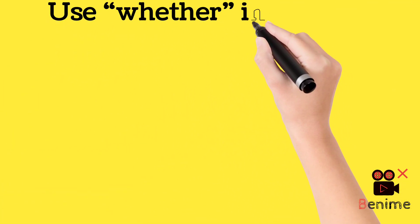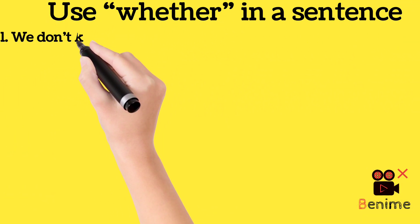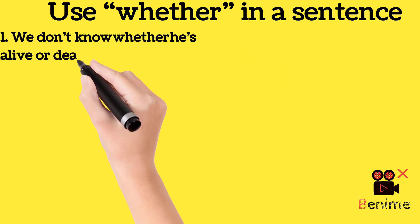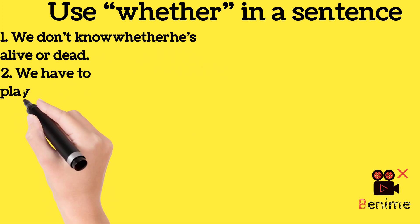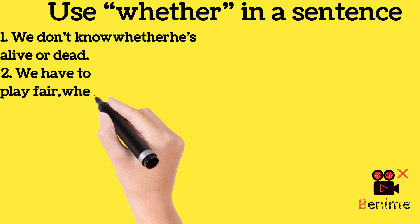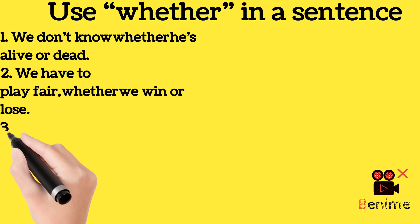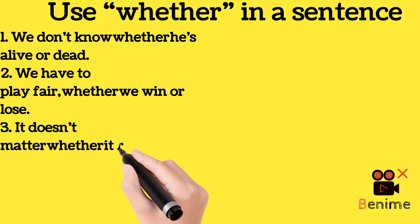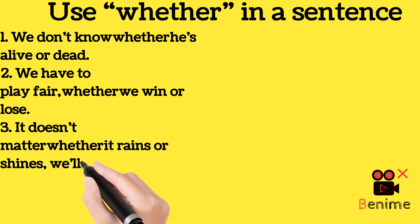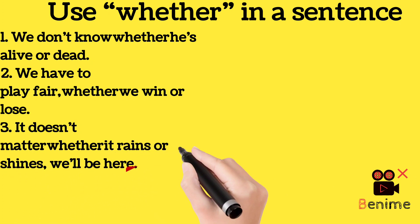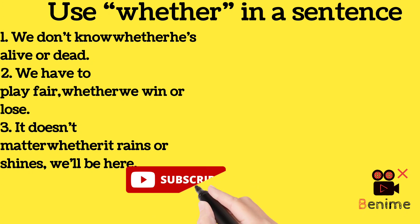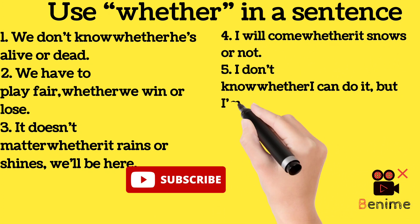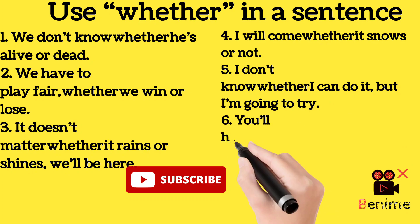Now use 'whether' in a sentence. 1. We don't know whether he's alive or dead. 2. We have to play fair, whether we win or lose. 3. It doesn't matter whether it rains or shines — we'll be here. 4. I will come whether it snows or not. 5. I don't know whether I can do it, but I'm going to try. 6. You'll have to do it whether you like it or not. 7. I don't know whether I can do it or not, but I'll try.